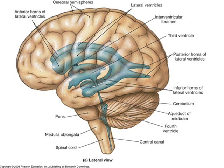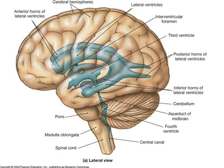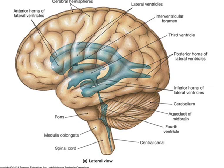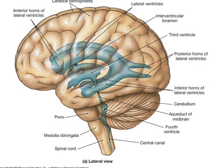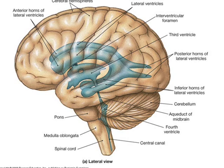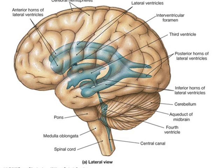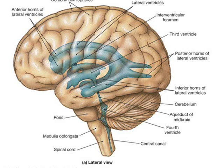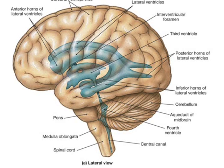So what exactly is the medulla oblongata and where is it located? The medulla is located in the lower portion of the brainstem. It deals with several autonomic functions such as breathing and blood pressure. The cardiac center in the medulla is responsible for the heart rate.